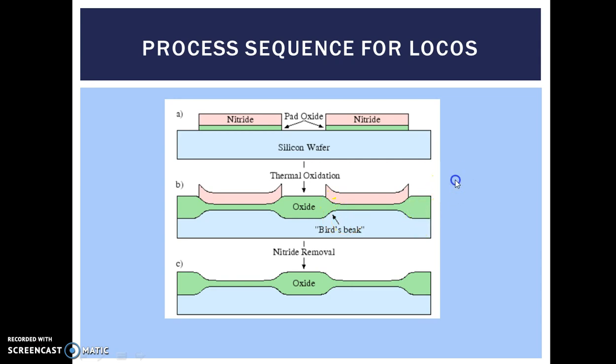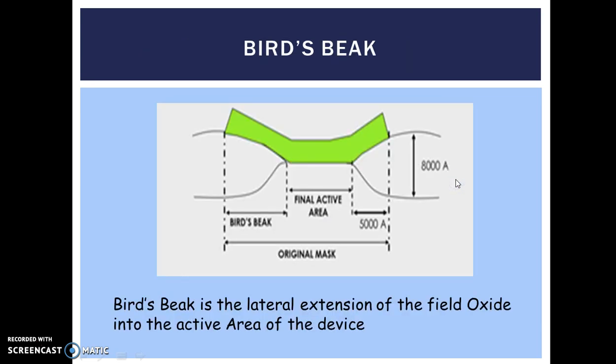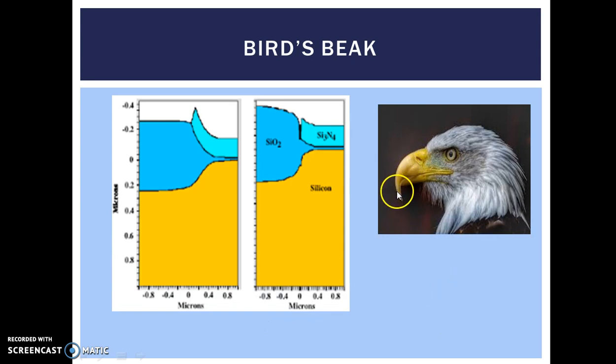You can see the elaborative figure here. The active region was earlier this much, and because of the encroachment of this field oxide, it is reduced. Therefore, we can say that the bird's beak is the lateral extension of the field oxide into the active area of the device.